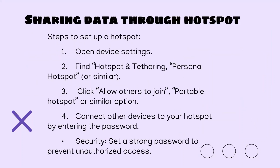To set up a hotspot, open your device settings and look in the Networks tab for Hotspot and Tethering or Personal Hotspot. There'll be a switch that says Allow Others to Join or Portable Hotspot. You may need to set a password and a network name. Once that's done, you can give people around you the password so they can use your data — especially useful if someone just needs to quickly check something online. It's important to set a strong password so that others can't connect without your knowledge and accidentally use up your data cap.